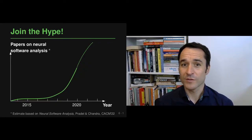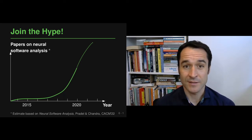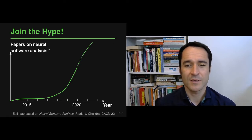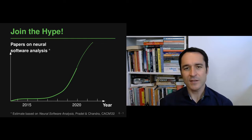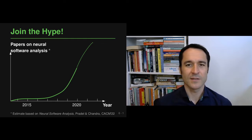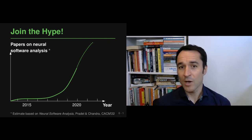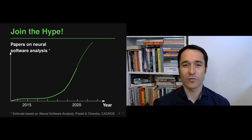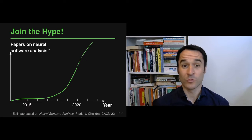This overall idea of neural software analysis is actually pretty recent. The first neural analyses really came out around 2015, and then it took the community a while to explore these ideas further. A few years ago there was really an explosion of neural software analysis, and by now we have a significant fraction of all papers submitted and accepted at major conferences being some form of neural software analysis.